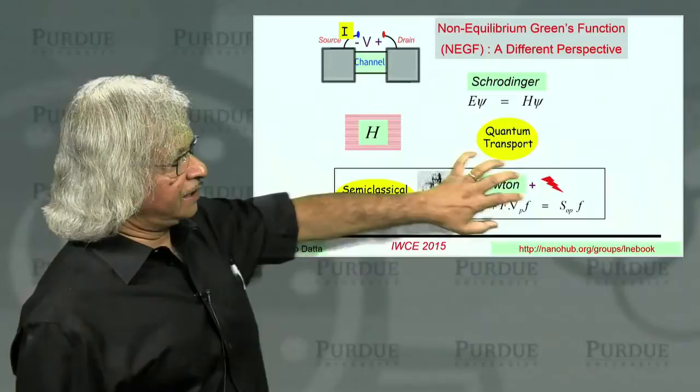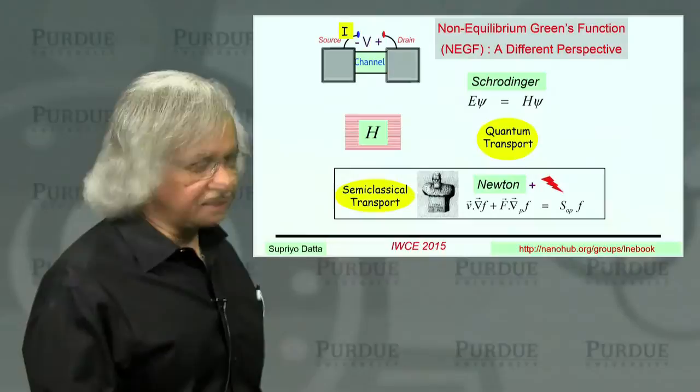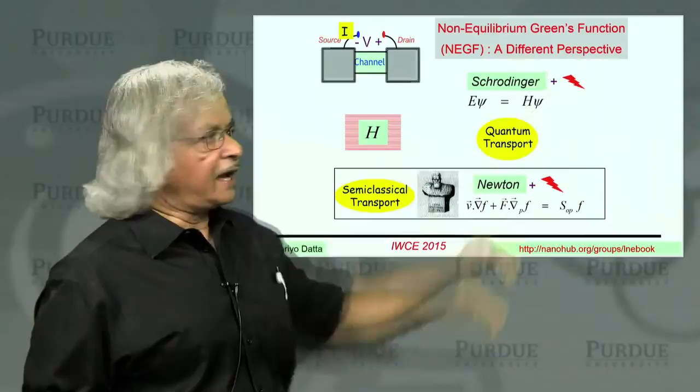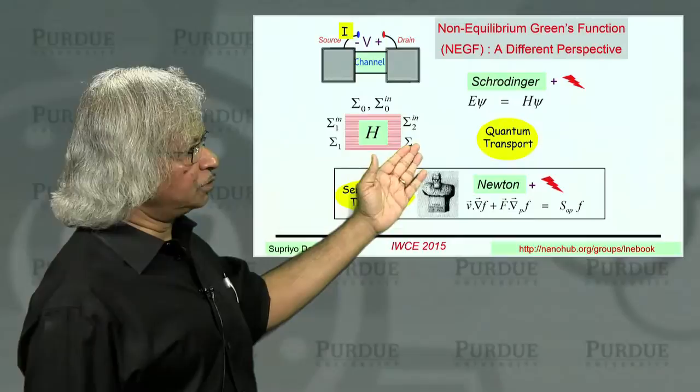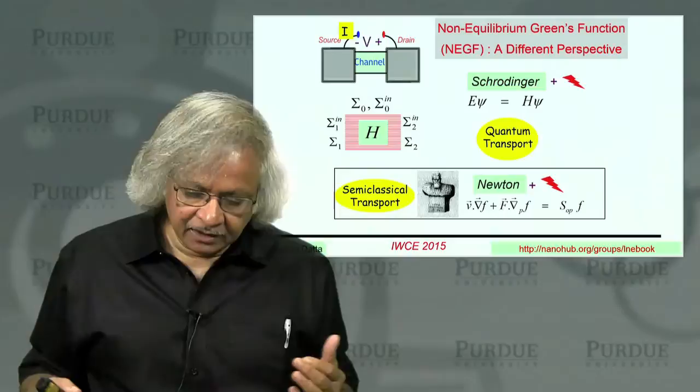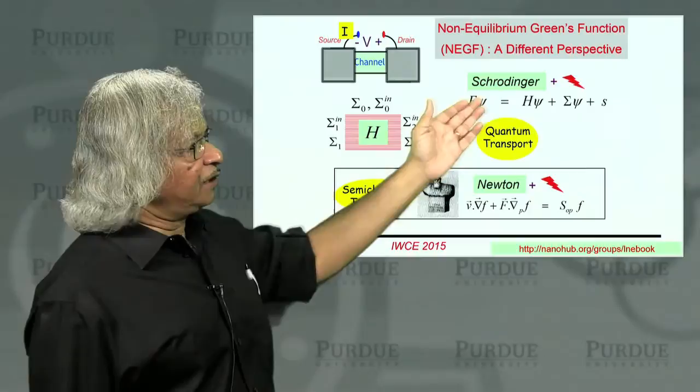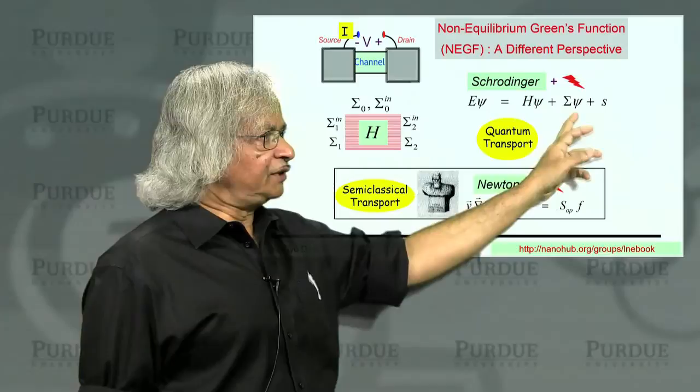Now, in quantum transport also, you would expect the mechanics part to be replaced by quantum mechanics. But then you still need to add the entropy-driven part to it. And when you do that, in this NEGF method, this entropy-driven part comes in through what are called these self-energy functions, sigma one and two describing the two contacts and this sigma zero which describes the interaction with the surroundings. And these then appear in a modified Schrodinger equation through these additional terms.